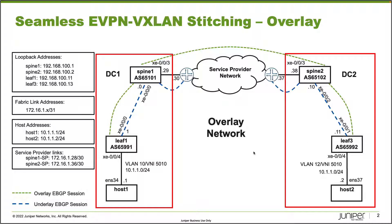We have the overlay network that we're configuring, and also the underlay network. We have loopback addresses for Spine1, Spine2, Leaf1, and Leaf3, fabric link addresses, host addresses, and service provider links — though those aren't too important for our overlay network configuration. For the overlay, we will be configuring eBGP, meaning each device has its own autonomous system. Leaf1 uses AS65991, Spine1 uses AS65101, Spine2 uses AS65102, and Leaf3 uses AS65992. The underlay network also uses eBGP but with a completely different set of AS numbers.